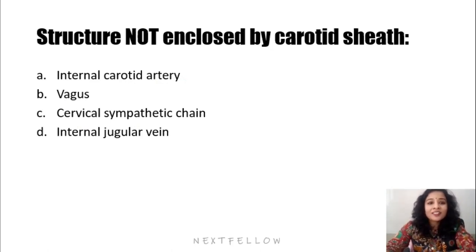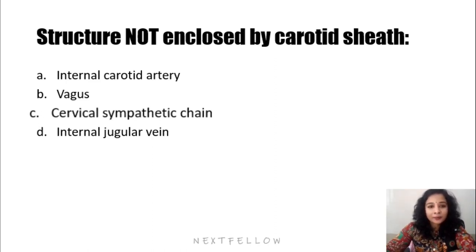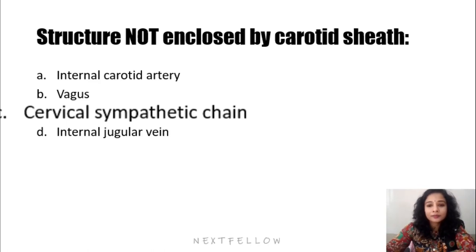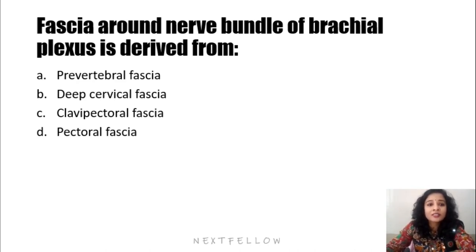A question: the structure not enclosed by the carotid sheath — internal carotid artery is a content, vagus is a content, and the cervical sympathetic chain lies posterior to the carotid sheath, so the answer is the cervical sympathetic chain. Also, the fascia around the nerve bundle of the brachial plexus is derived from the pre-vertebral fascia, which continues to form the axillary sheath enclosing the brachial plexus.